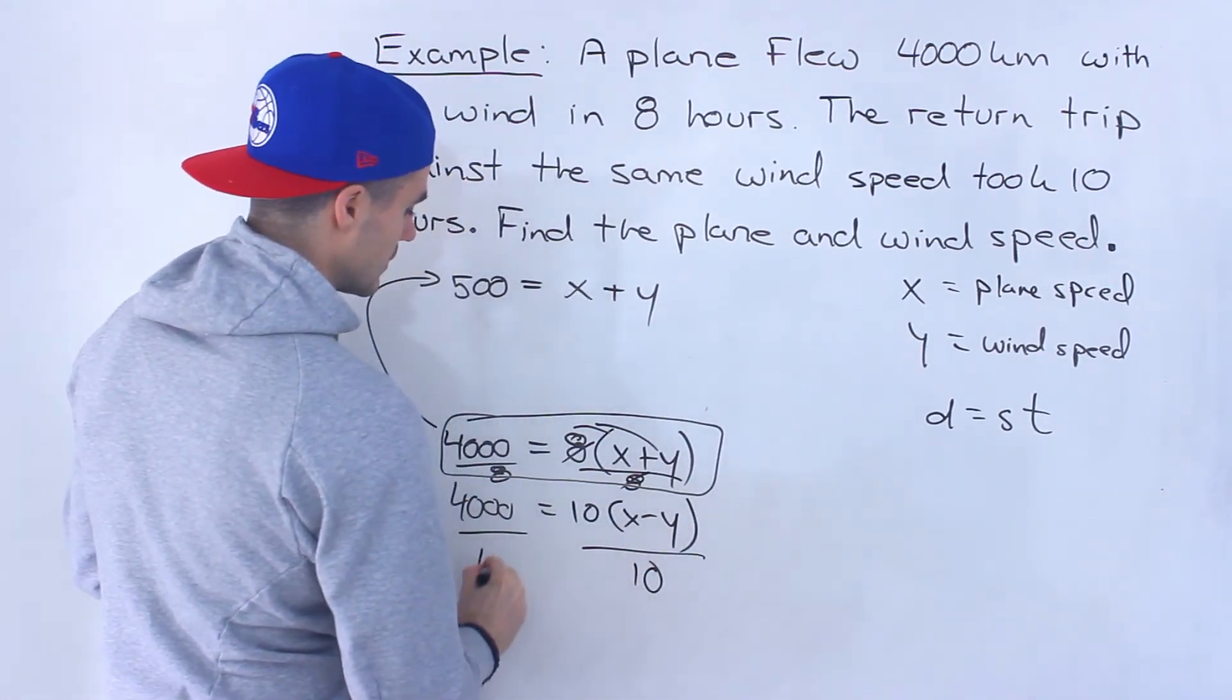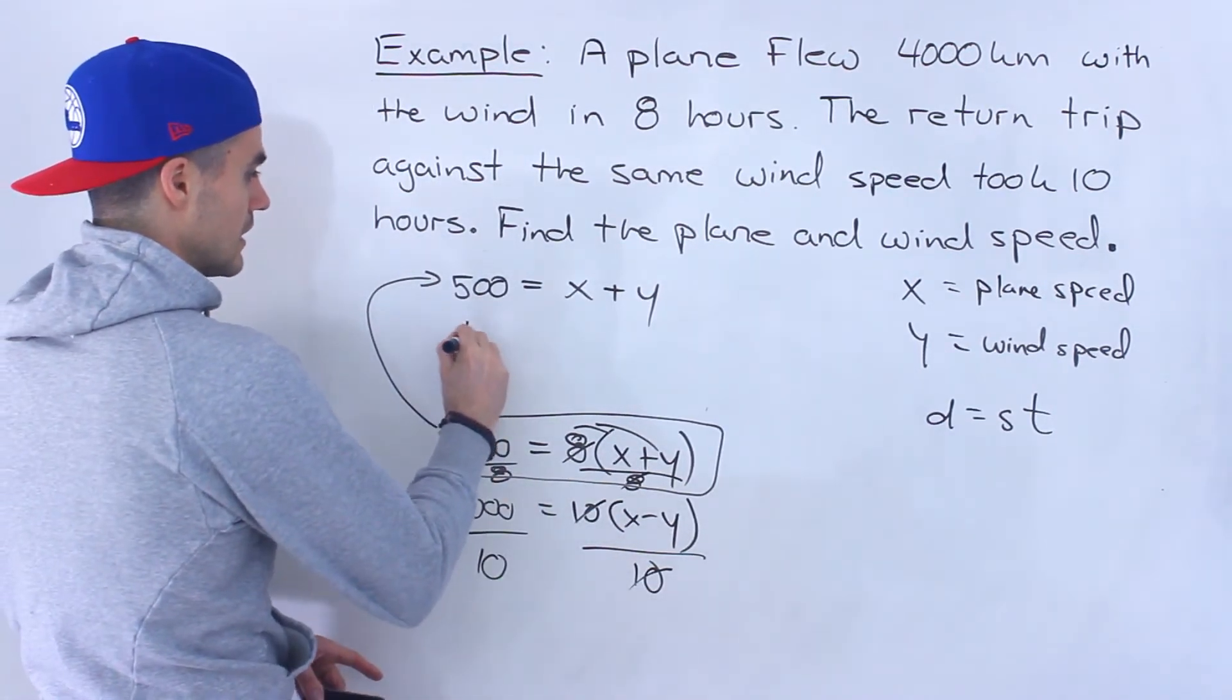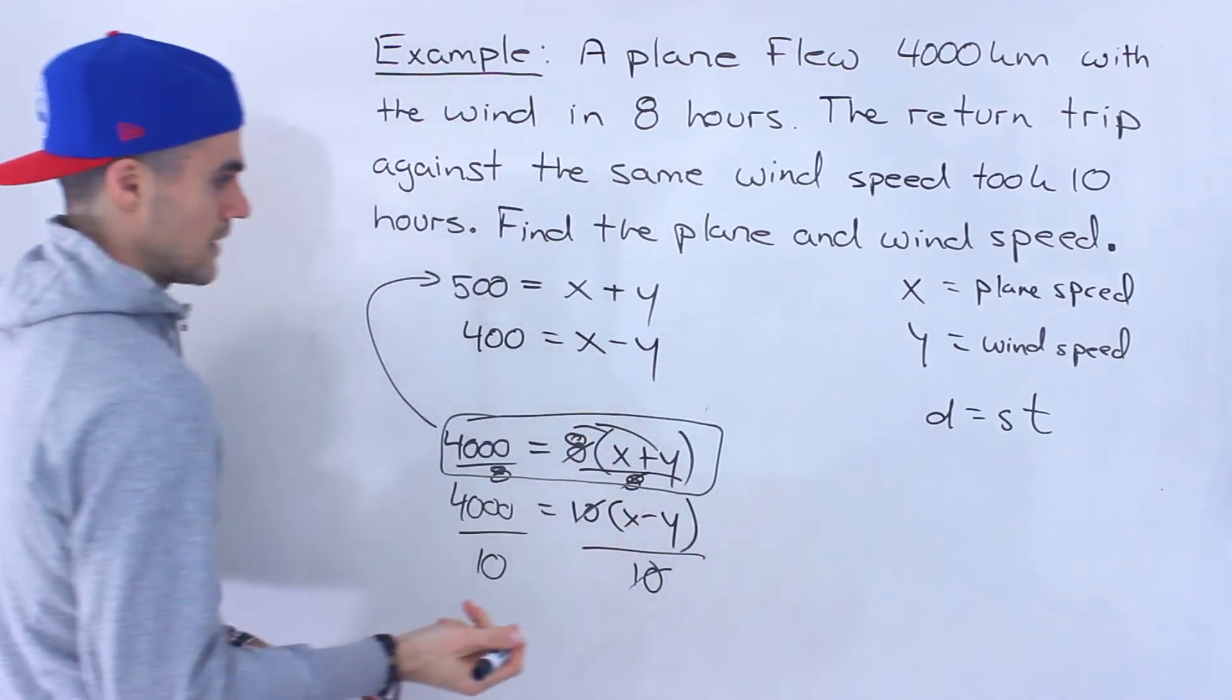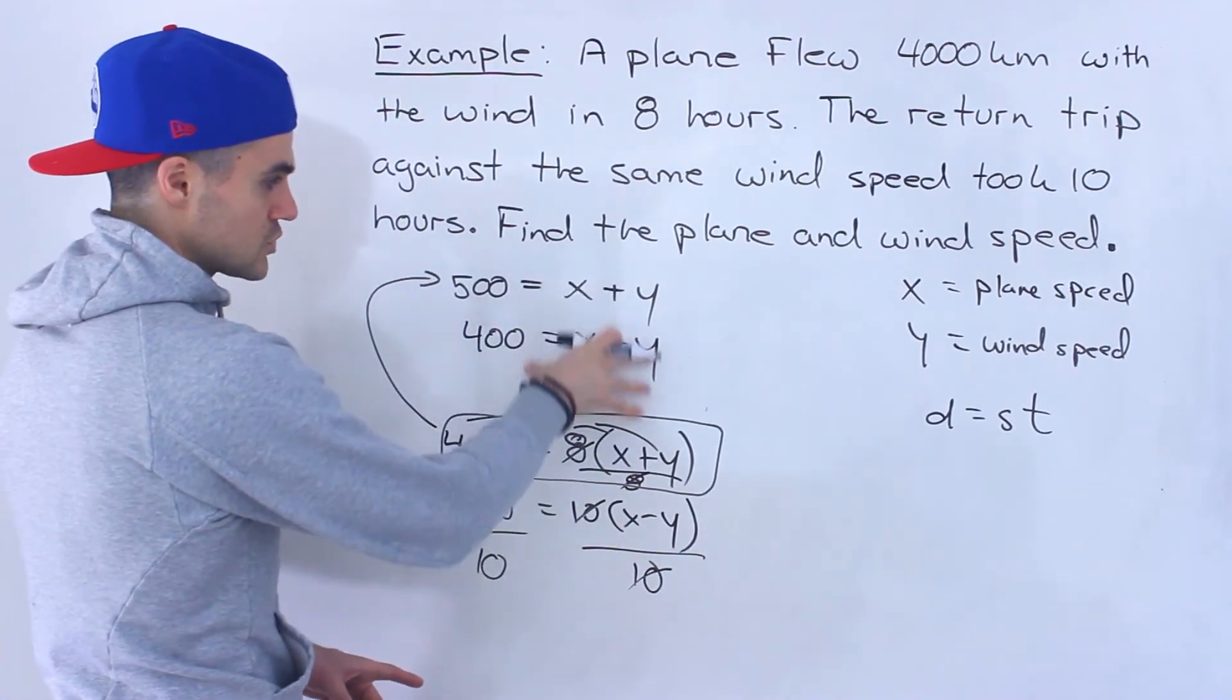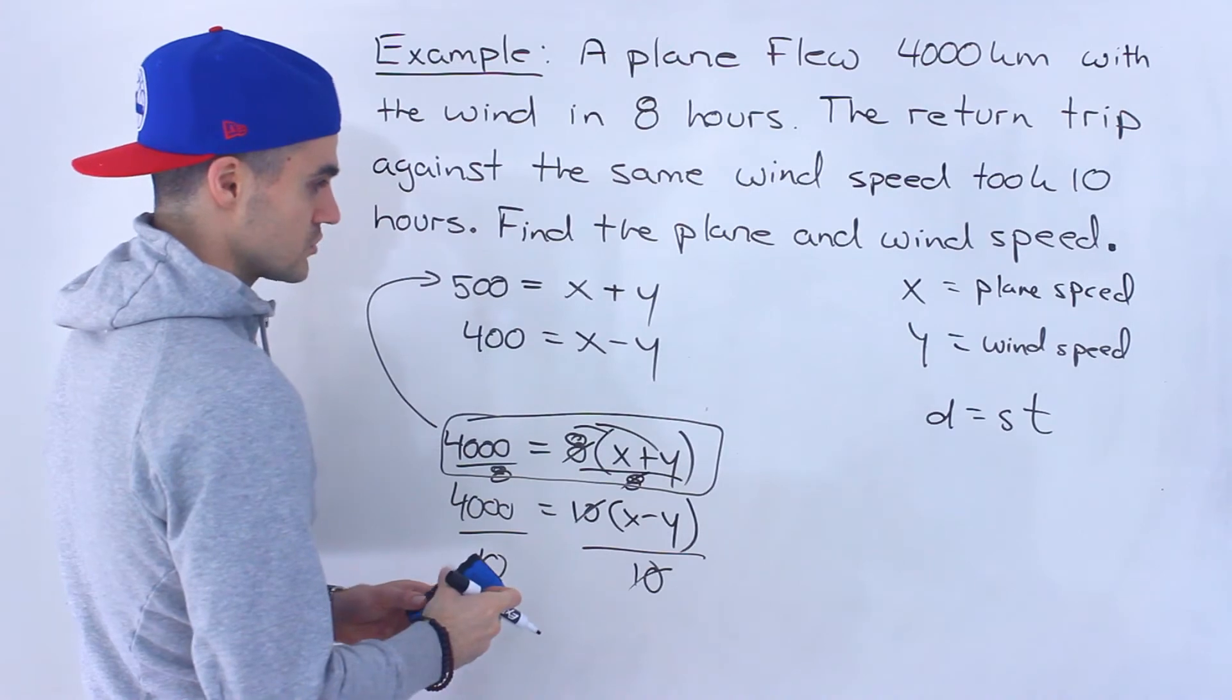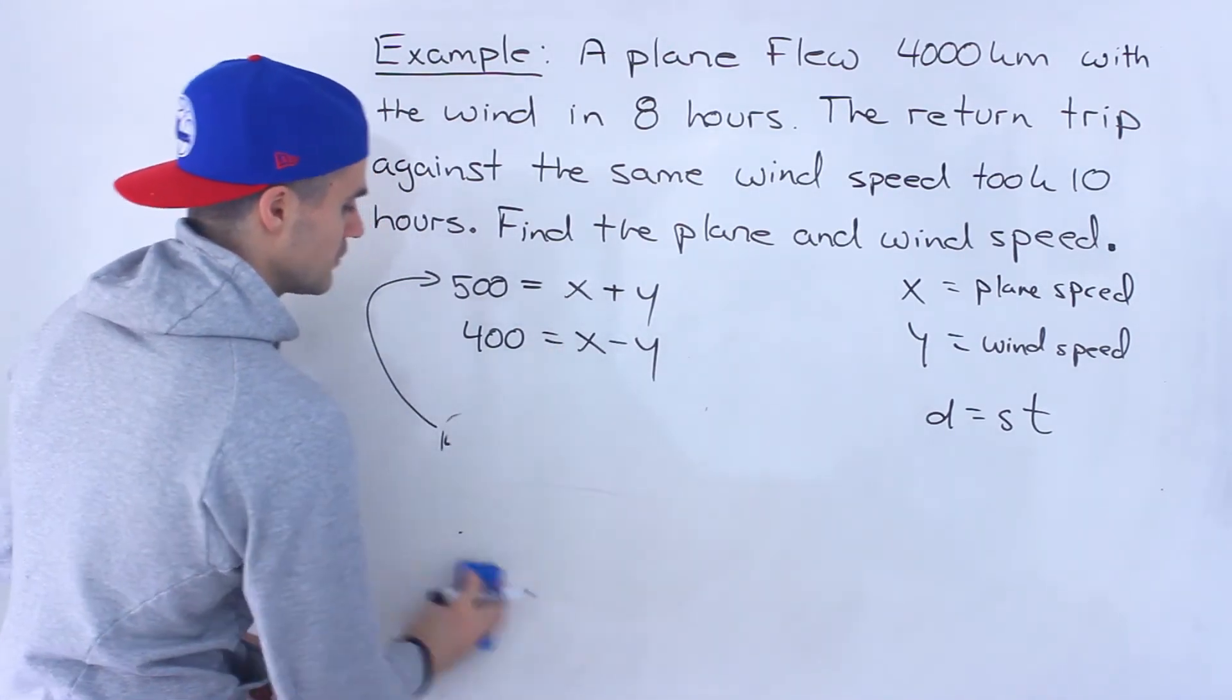Divide this by 10. Notice those 10s cancel out. 4,000 divided by 10, that would give us 400 and we're left with that X minus Y. So the solutions to this set of equations and the solution to this set of equations is going to give us the exact same solution because they're both the same set of equations. This one is just a lot more simplified.